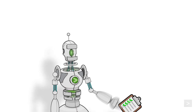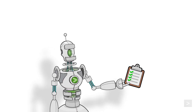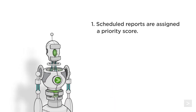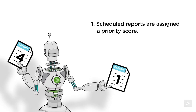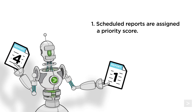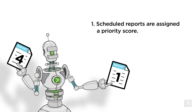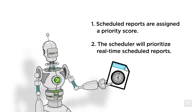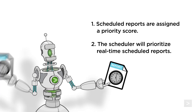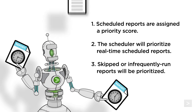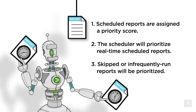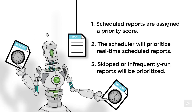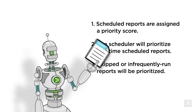The Report Scheduler also applies three rules over the scheduling modes to help reduce the number of skipped report runs. First, scheduled reports are assigned a priority score — lower average run times are given a higher priority to run, while slow-completing reports are skipped more often. The next rule is the scheduler will prioritize real-time scheduled reports, allowing them to run first and compete against other real-time scheduled reports; then continuous scheduled reports will run next. The third rule is scores will be adjusted to give higher priority to reports that are skipped or infrequently run. After a report is skipped several times, its priority score lets it run ahead of the reports that were forcing it to skip previously.